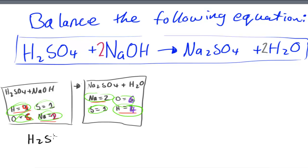H2SO4 plus 2 NaOH (sodium hydroxide) produces Na2SO4 (sodium sulfate) and 2 H2O. And that's your balanced equation.